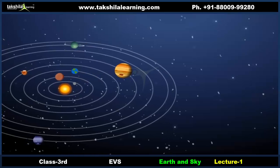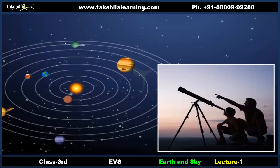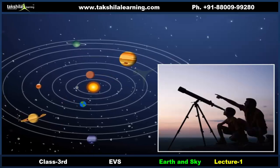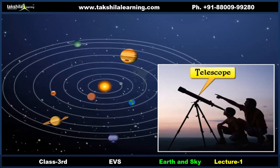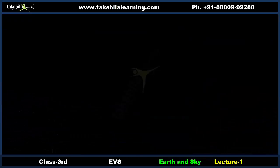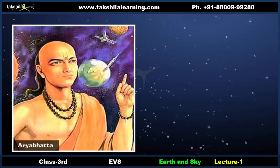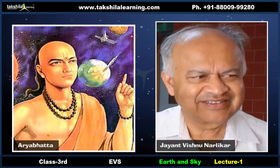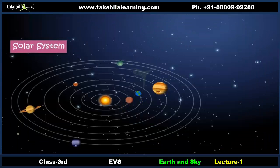An astronomer is a person who studies stars and planets. He uses a telescope for his study. Bhaskaracharya, Aryabhata, and Jayant Vishnu Narlikar are some well-known Indian astronomers.